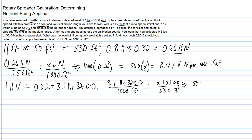So we've got 550 times 3.1 and over here we've got a thousand times x. We do our multiplication, divide both sides by a thousand and we end up with 1.7 pounds 32-0-0. That's how much of the product 32-0-0 that we'd have to collect over a 550 square foot area.